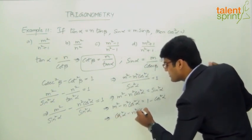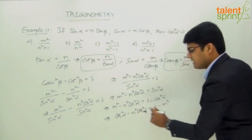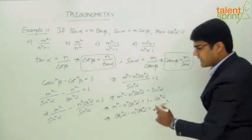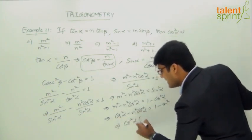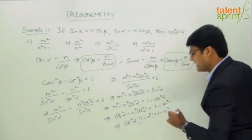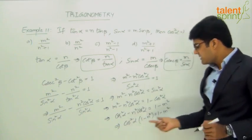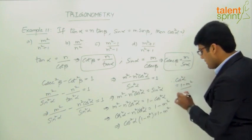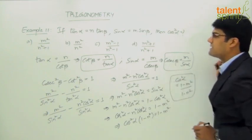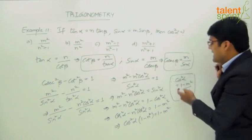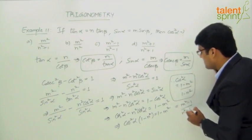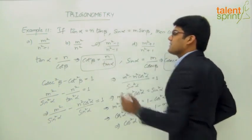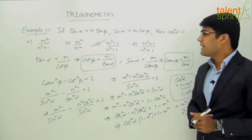So cos²α - n²cos²α = 1 - m². Taking cos²α as a common factor: cos²α(1 - n²) = 1 - m². Therefore, cos²α = (1 - m²)/(1 - n²), which is the same as (m² - 1)/(n² - 1) when multiplying numerator and denominator by -1. This matches option C: m² - 1 by n² - 1.